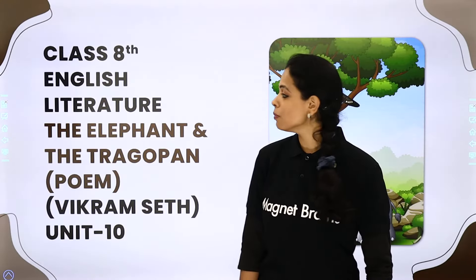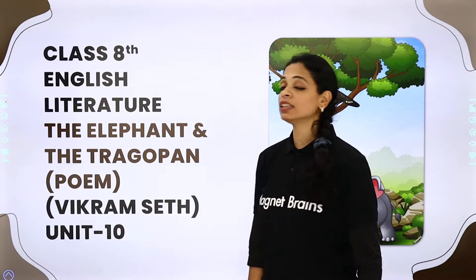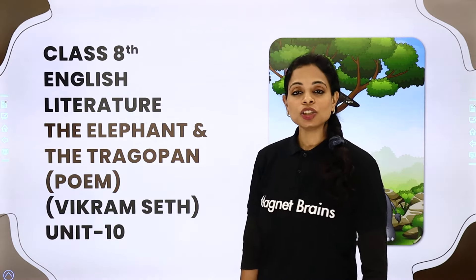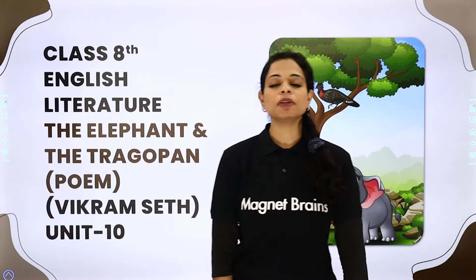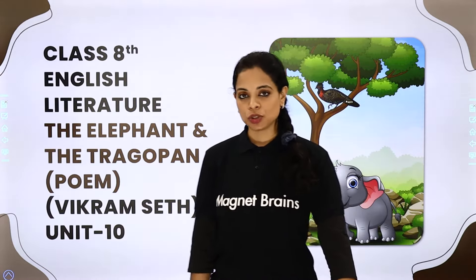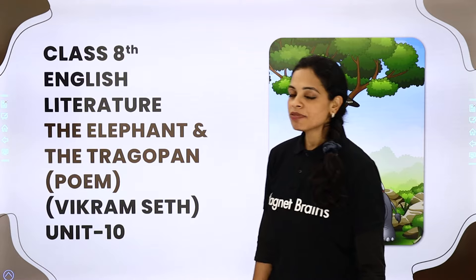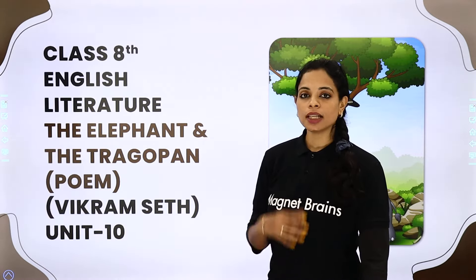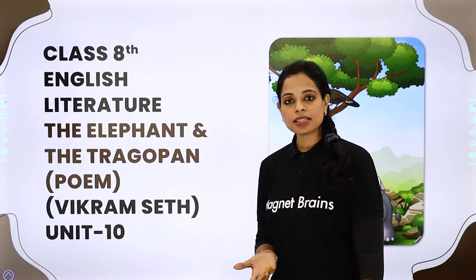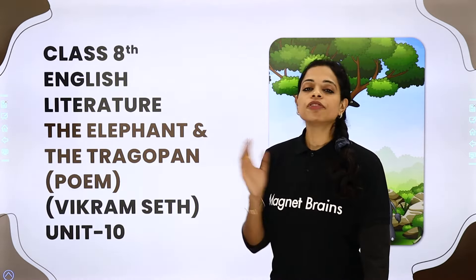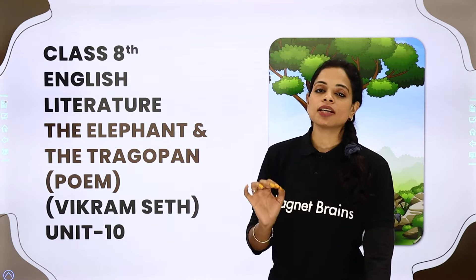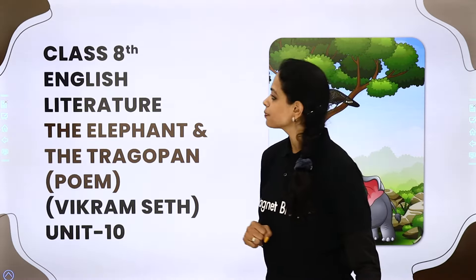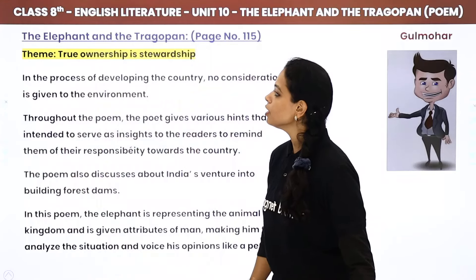The name of the poem is The Elephant and the Tragopan. I have already told you about it in the previous video. In this video, we will see the theme, the summary, the poetic devices, followed by question answers which are given at the end of your chapter.